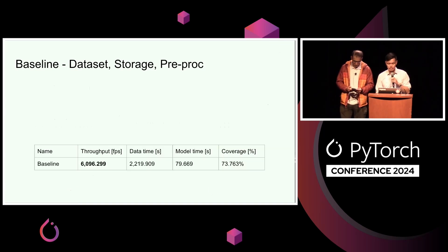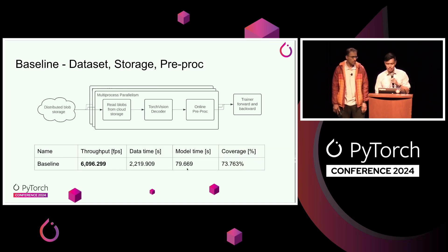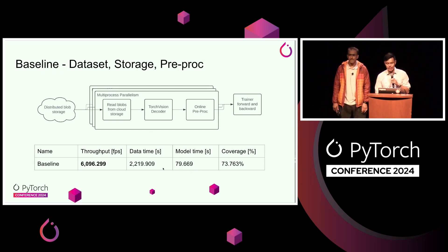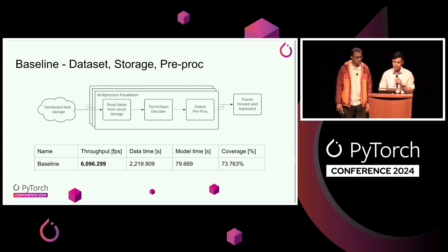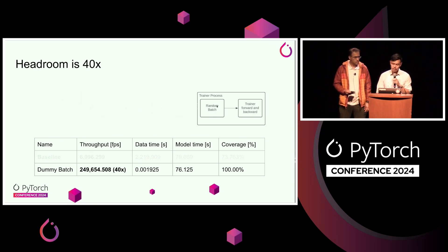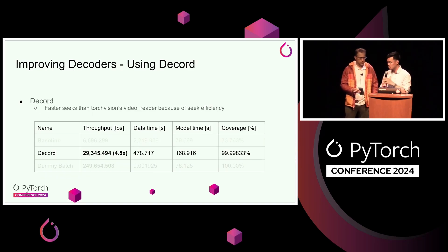We're using the TorchVision decoder for our baseline. We got about 6,000 frames per second, and the coverage was not 100% — probably due to some encoding format not compiled into our version of FFmpeg. Looking at data time versus model time, you can see training time was extremely dominated by loading data — our GPUs were very, very hungry. To find the headroom, we threw out all online reading and generated random batches directly in the trainer process, which showed a 40x improvement in throughput. That's what we want — we don't want to be spending any time waiting for data.